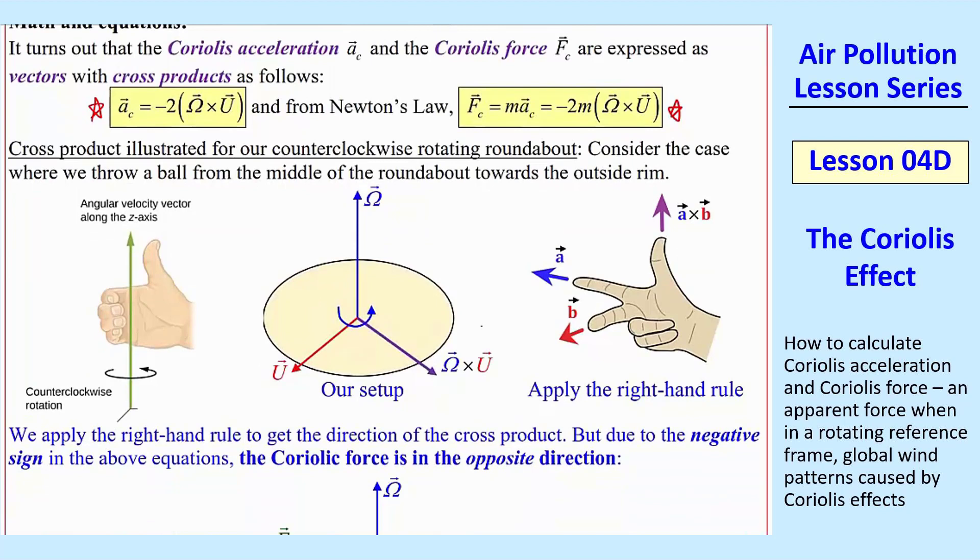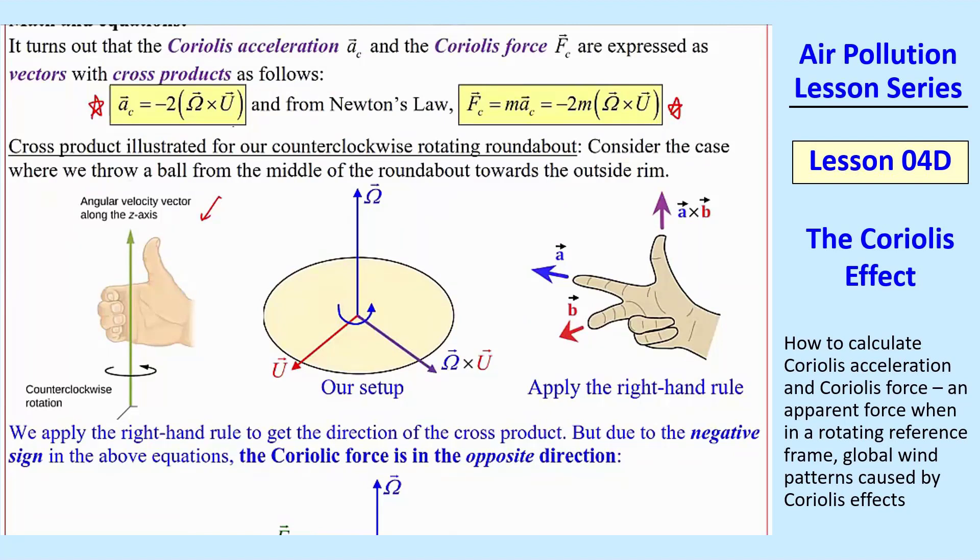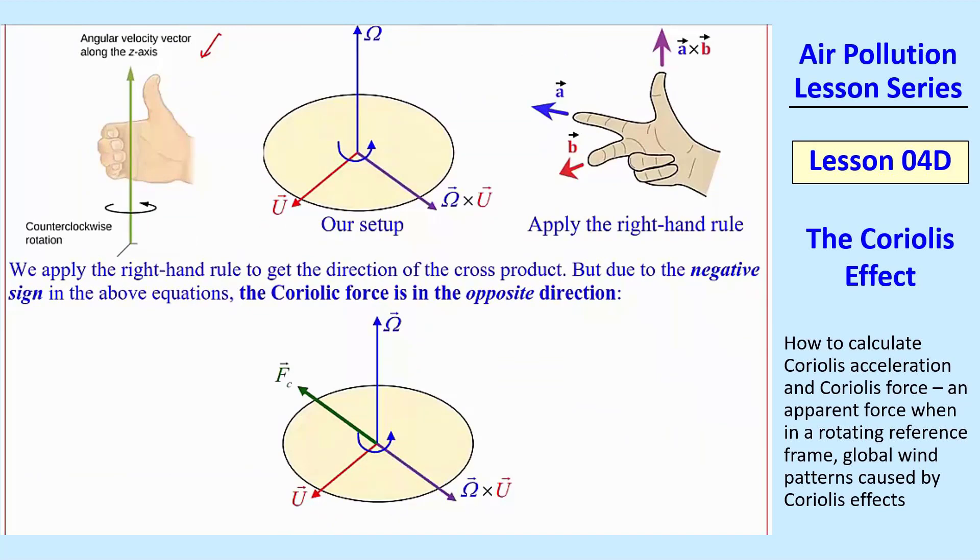Now remember back to your math class, where cross products, you use the right-hand rule. So the first one here just shows angular velocity vector is positive using your right hand and pointing your thumb up. In our setup with this roundabout or merry-go-round, we're looking for omega cross u with a negative sign. So for any right-hand rule with a cross product, if you have two vectors, a and b, a cross b, you point your right hand, has to be your right hand, not your left hand. In a, with your finger, your middle finger points b, and then your thumb points the direction of a cross b.